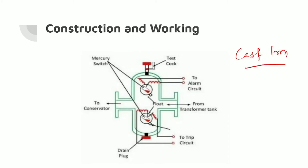The relay consists of two floats — one float and a second float. In the upper hollow float, a mercury switch is located which is connected to the Buchholz Alarm Circuit. There are two floats here: the first float is connected to your alarm circuit.